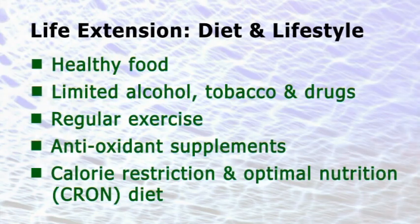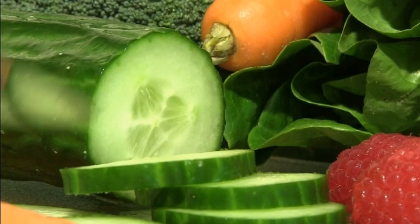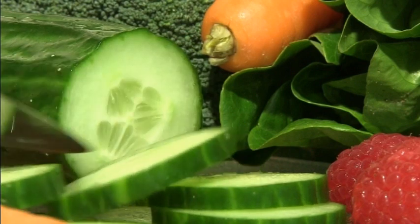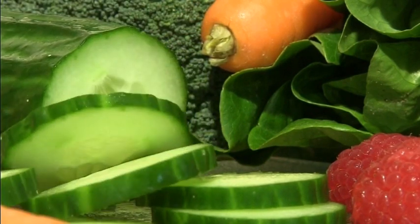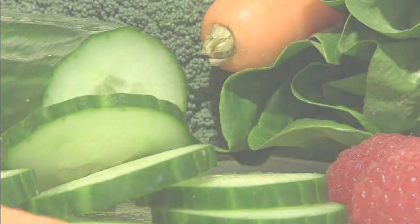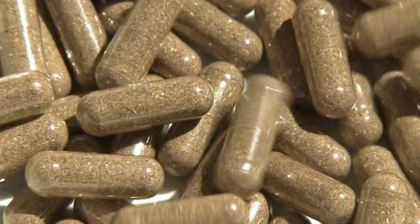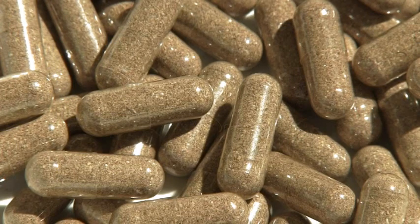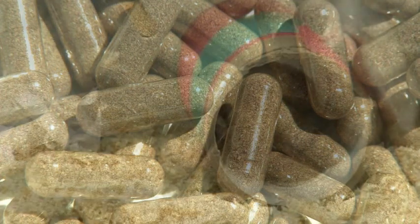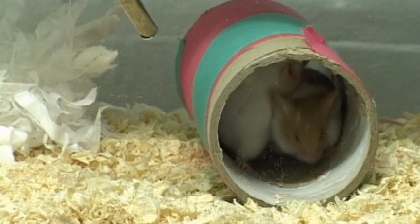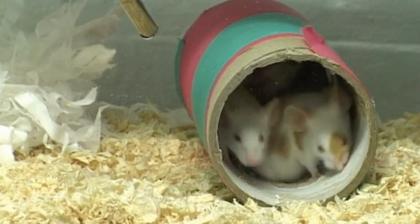Here, people reduce their intake of calories by 20-40% while still consuming enough vitamins and nutrients. Studies have shown that Crohn diets lessen the degeneration of stem cells as well as reducing the incidence of cancer. In animals, Crohn diets have demonstrated up to a 40% life extension.